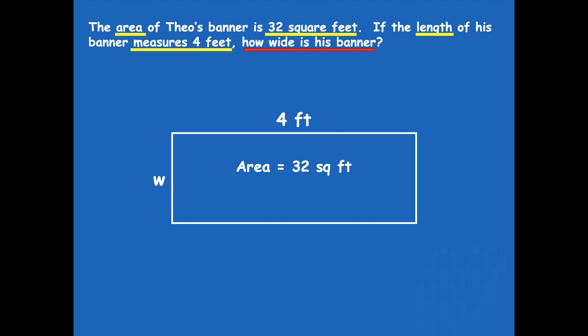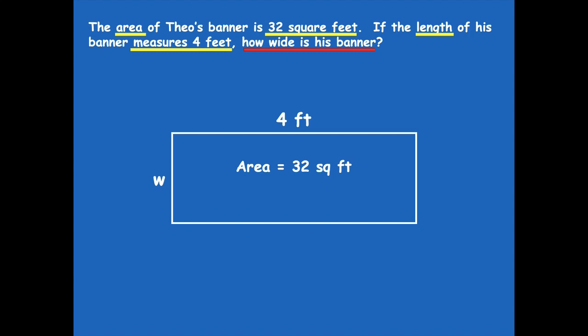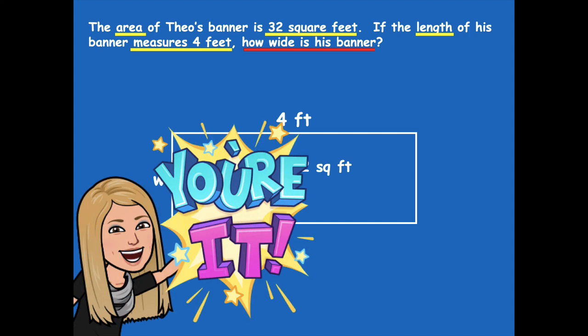So nope, the width sure can't be less than 4. Now, is the area model I drew an accurate representation of the rectangle in this problem? If we know my length is 4 feet but the width has to be longer than 4 feet, do my side lengths look like they match? No, they don't. The width has to be longer than the length in this example. So pause the video — draw a quick sketch of what you think that rectangle should look like, where the width is longer than the length. Then click play when you're ready for the next step.